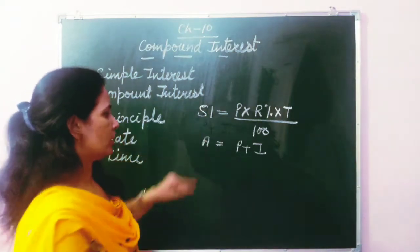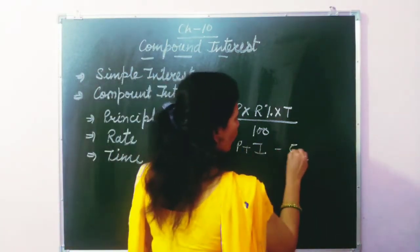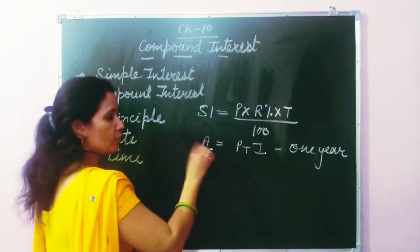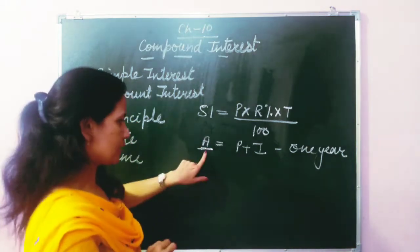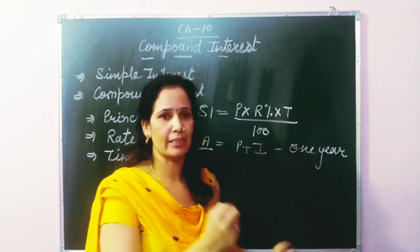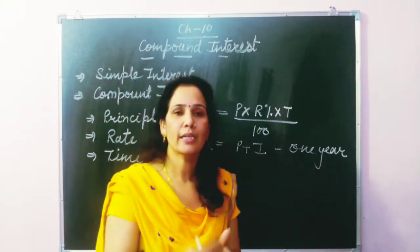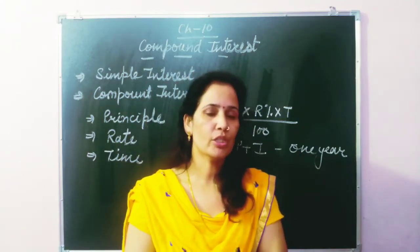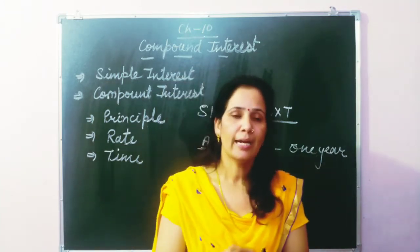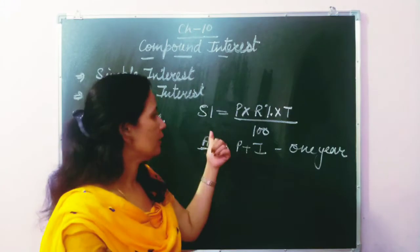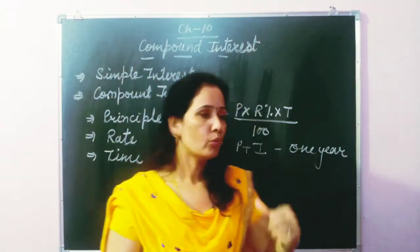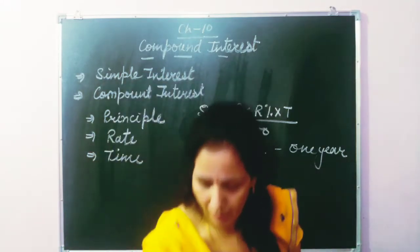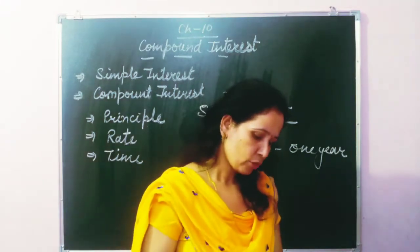In the simple interest formula, first we find out the amount for one year. Then for the next year we calculate the interest on this amount and add it to find the amount for the second year. In this way we keep adding interest year after year, and at the end we find the total amount the person has to pay. The extra amount paid beyond the principal is our compound interest. Let's start our exercise questions.